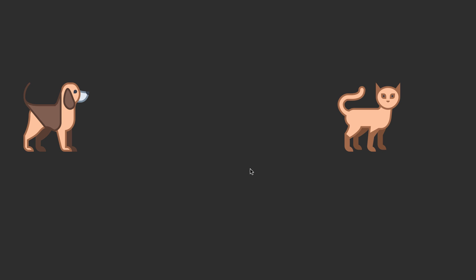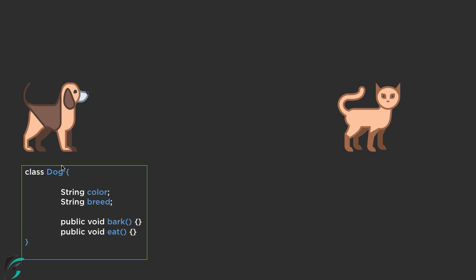First of all, how can we understand inheritance? Let me show you some examples. Here on the left hand side I have the dog icon, and on the right hand side I have a cat. If I ask you to define the class of a dog, then you will simply define the class dog with its color, breed, and a few of its activities such as bark and eat.